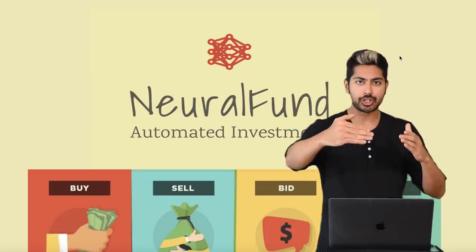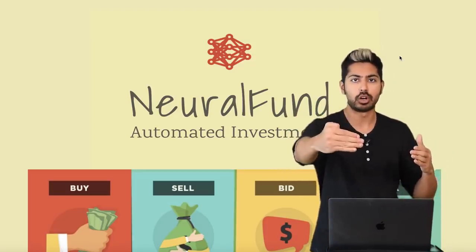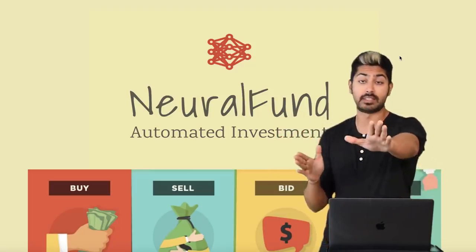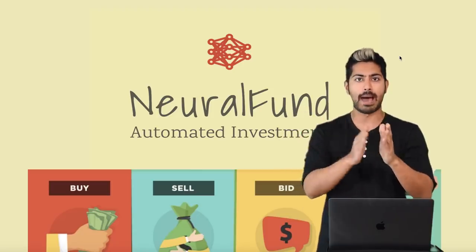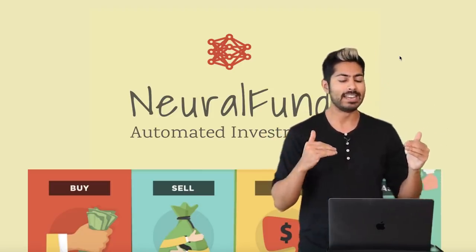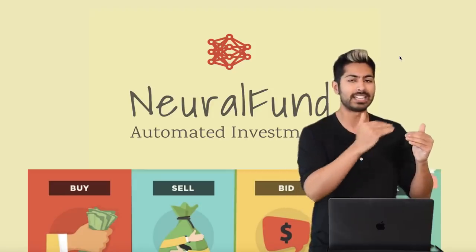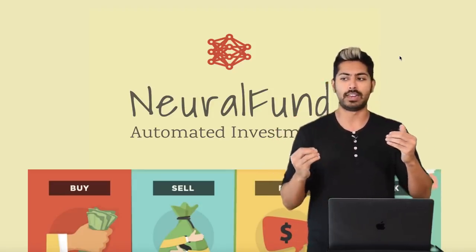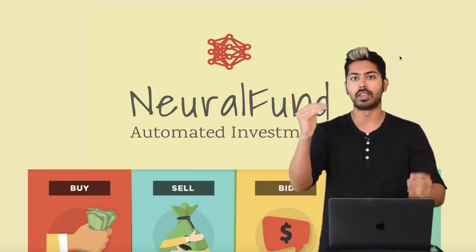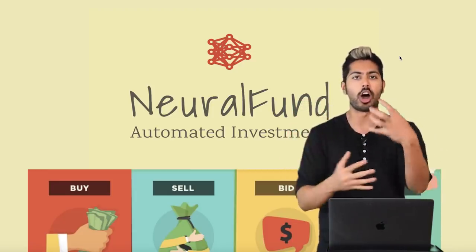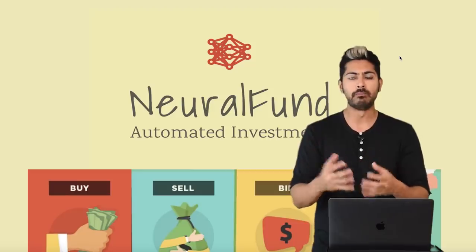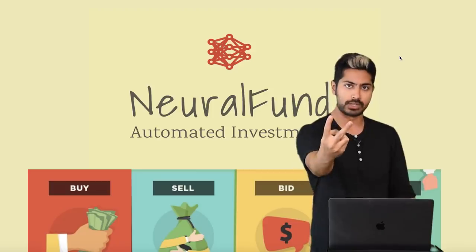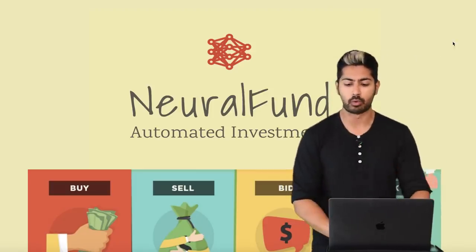What it does is it makes predictions about stock prices in the future for various companies in a sector that the user selects — say technology. Within technology, Apple, Google, and Amazon are three different stocks, and it's going to use an AI model to predict future prices for each of these stocks. Based on the stock it predicts to be the highest price, it will buy that for you. It's like an automated hedge fund manager, and rather than taking a 20% cut, it's going to take a 2% cut. Let me go ahead and demo this for you.